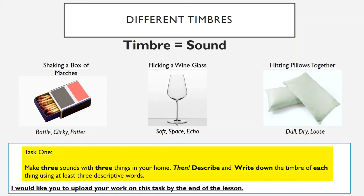So for task one, I would like you to make three sounds with three things in your home. Like I've done, find three things and make three sounds. Once you've had a go, describe and write down the timbre of these three things using at least three descriptive words each. List what the object is, then give three words to describe how it sounds. Try and find the most interesting timbres you can around your house.